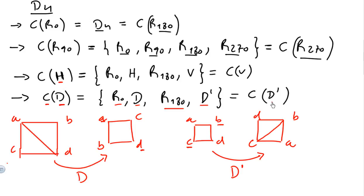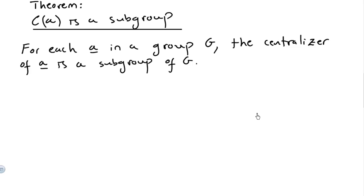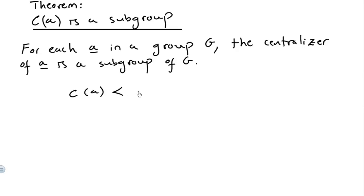The centralizer of the diagonal-prime rotation leads us to the last theorem of this video: for each element a in a group G, the centralizer of a is a subgroup of G. In other words, the set of all elements that commute with a forms a subgroup of G.